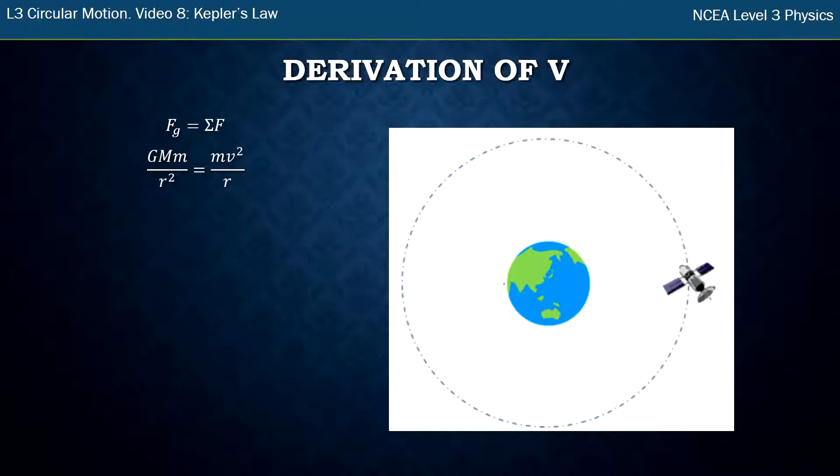Once we equate these two together, one thing you need to do, certainly for higher marks and excellence, is go through the following derivations and simplifications of these two formulas. The first thing we can do is cancel out the little m that appears on both sides of the equation.